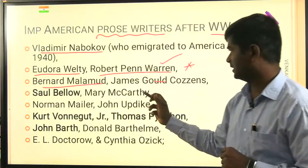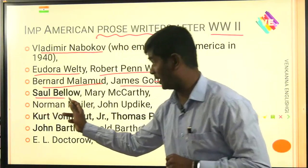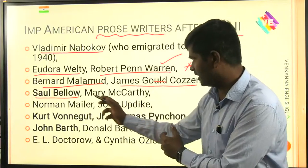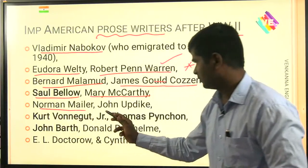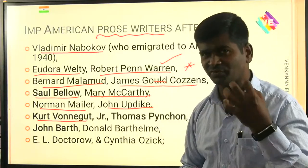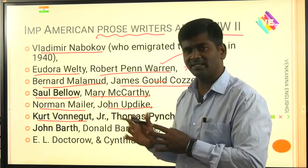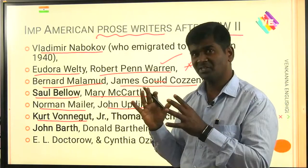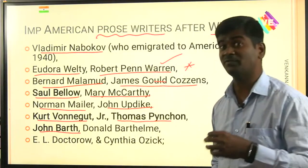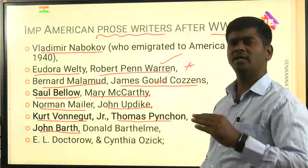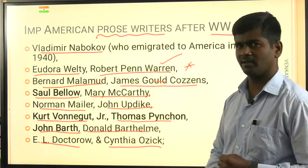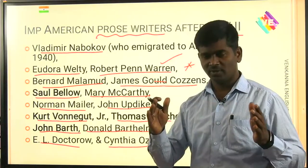Other important prose writers include Bernard Malamud, James Gold Cousin, and Saul Bellow — a very popular Nobel laureate writer you may have read as part of your MA or BA. Also Mary McCarthy, Norman Mailer, John Updike, Kurt Vonnegut — a very important science fiction writer — and Thomas Pynchon, John Barth, Joseph Heller, Donald Barthelme, E.L. Doctorow, and Cynthia Ozick, the popular fiction writers of American literature.